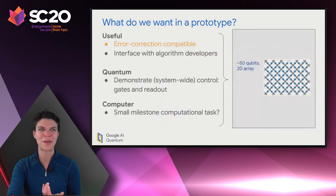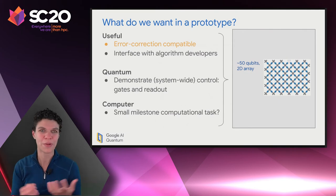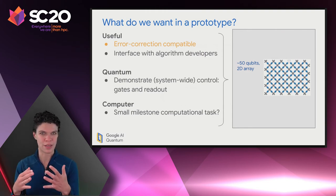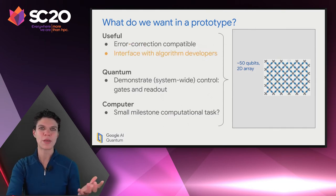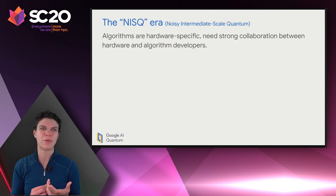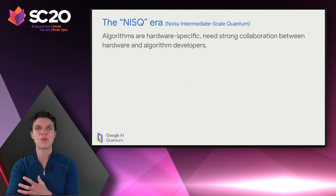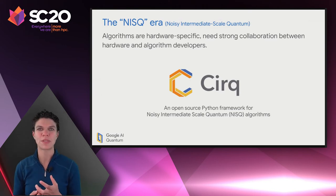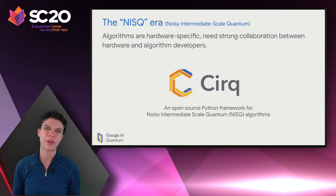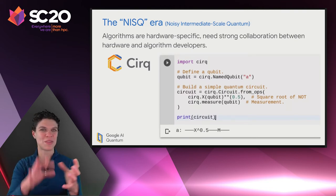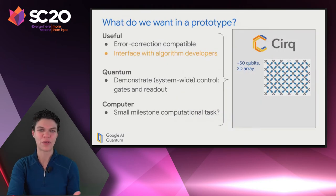There may be interesting undiscovered applications in the NISQ area. This motivates our prototype design: around 50 qubits in a two-dimensional array where each qubit communicates with its nearest neighbors. For the 'useful' half, we need an interface with our algorithm developers. To achieve good collaboration between hardware and algorithm developers, we've developed what we call Cirq — an open-source Python framework for noisy intermediate scale quantum algorithms. It features convenient ASCII art to help visualize the circuit you're drawing, and it's what we use internally with our own algorithm developers, available open-source as well.